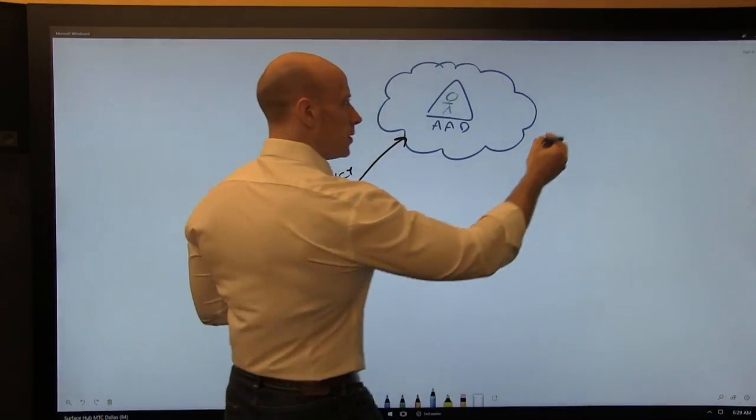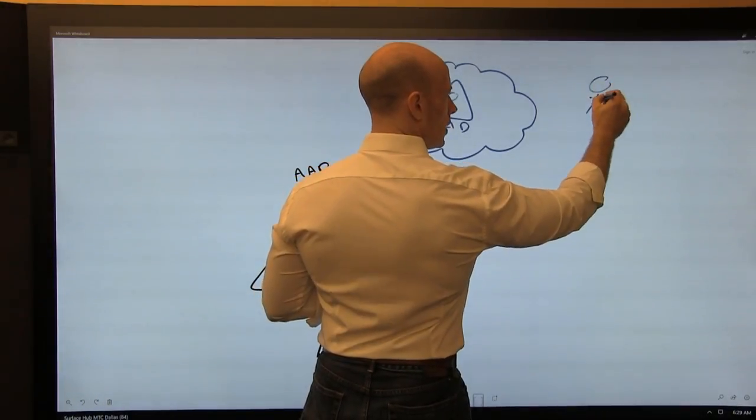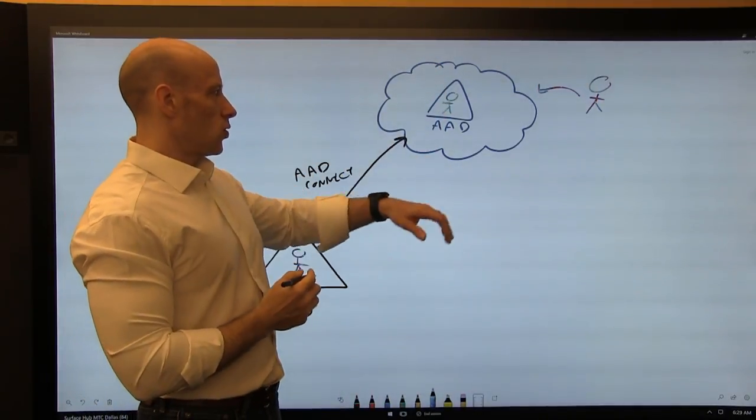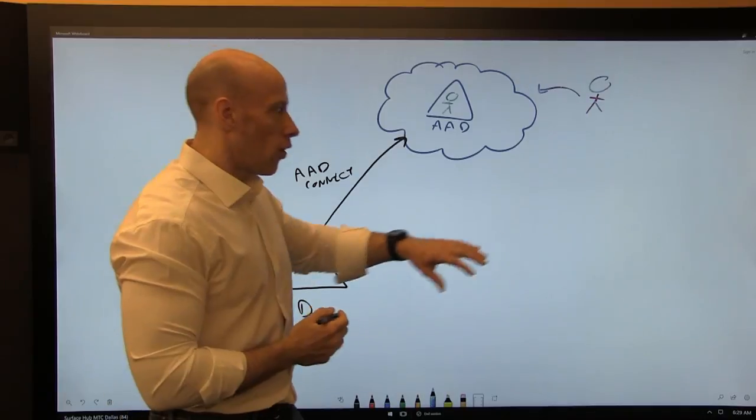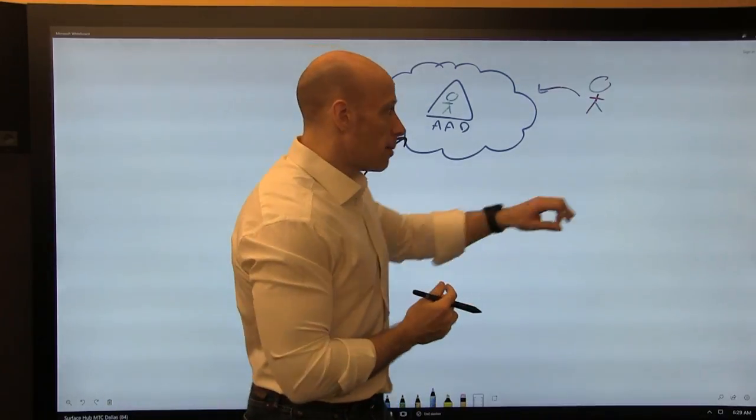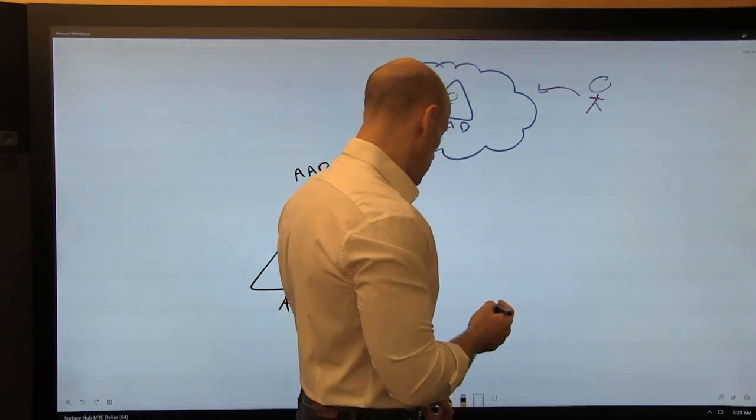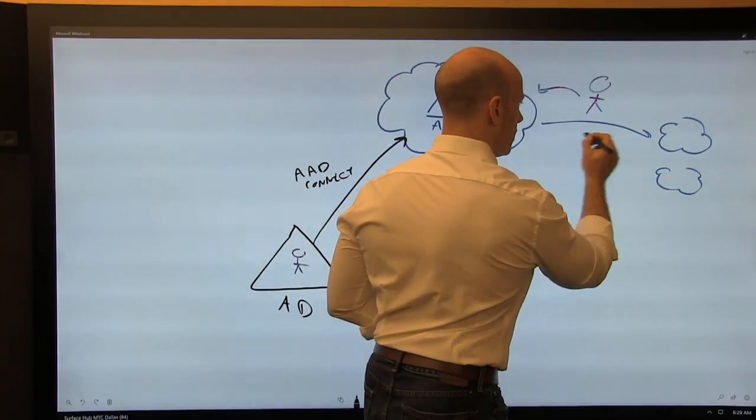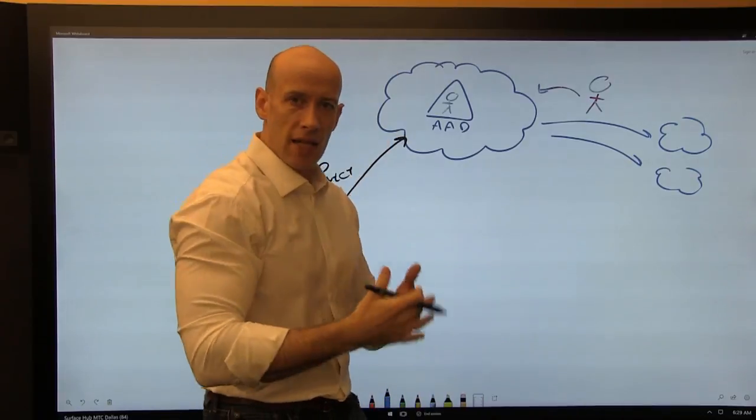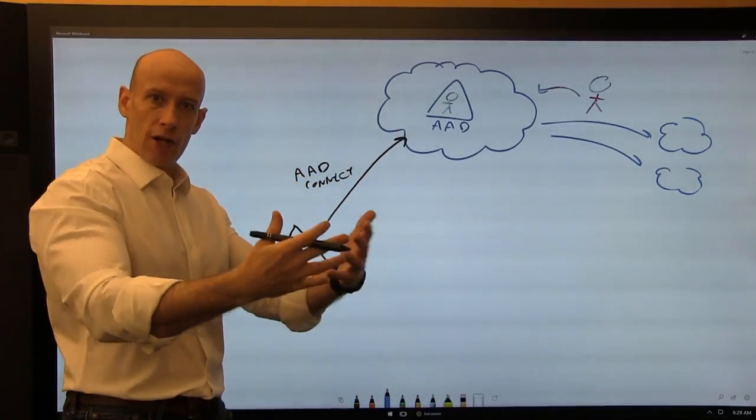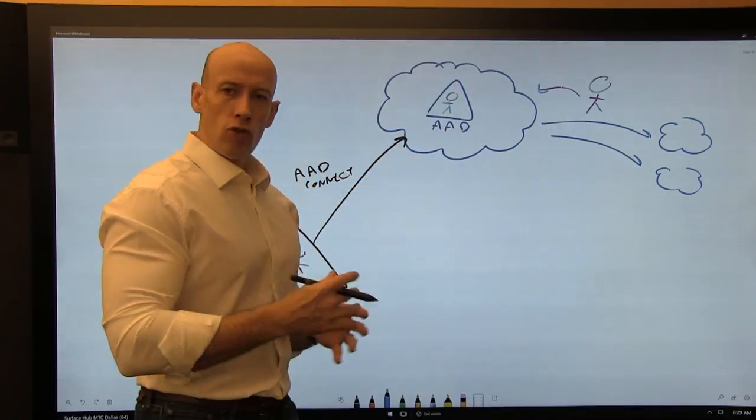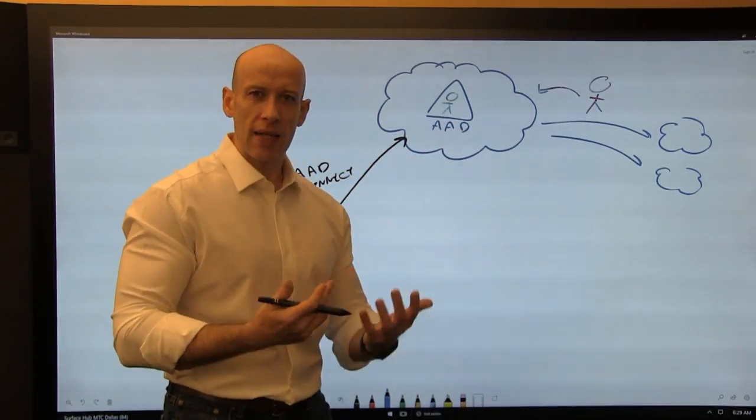So now I am that user and I want to authenticate. Maybe I want to authenticate to use an Azure service, maybe I'm using Office 365, maybe I'm using some other cloud service that has been federated via Azure AD. And that's a big benefit of Azure AD is that federation broker. So I want to authenticate, and there's really three key ways this can happen today.